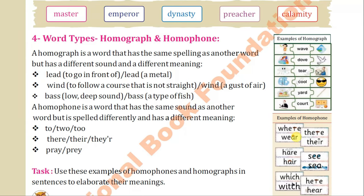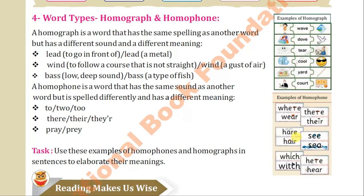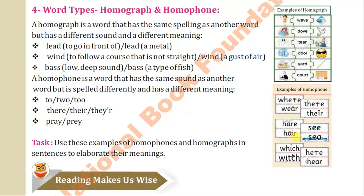Next we come to word types — homograph and homophone. A homograph is a word that has the same spelling as another word but has a different sound and a different meaning. For example: 'lead' meaning to go in front of, and 'lead' meaning a metal. Both have the same spelling but are pronounced differently. Next is 'wind' meaning to follow a course that is not straight — winding.